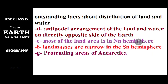Another interesting fact is the antipodal arrangement of land and water — meaning directly opposite to land there is a water body. For example, if you dig here and cross the entire globe to the other side, you would reach some ocean, not land. Most of the land area is found in the northern hemisphere, while land masses in the southern hemisphere are comparatively very less and narrow.